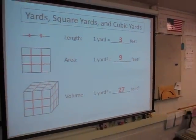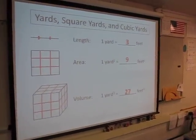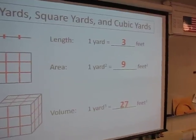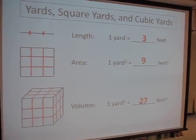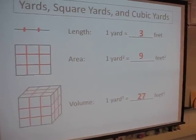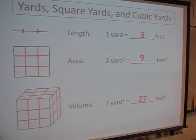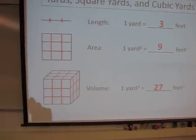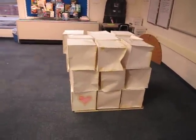So converting from length is easy. We know there are three feet in one yard. But don't use that three when you're doing area conversions or volume conversions. Remember that one square yard is nine square feet. And one cubic yard is twenty-seven cubic feet. And hopefully this is a good visual to help you to remember that.